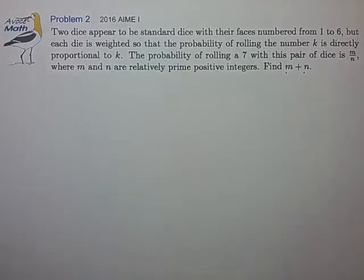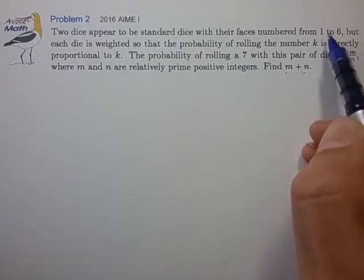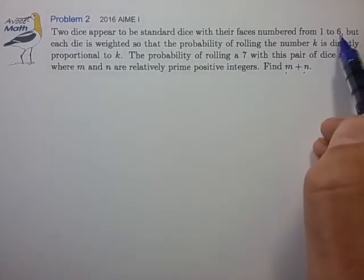So being one of the earlier problems, it's probably straightforward, so let's see what we can do. So we have this die with the standard numbers 1 through 6, but the probability of rolling any given die face is proportional to the number on the die.